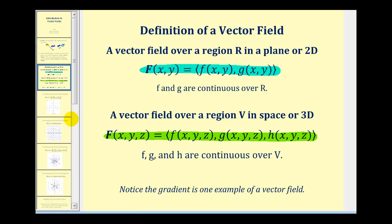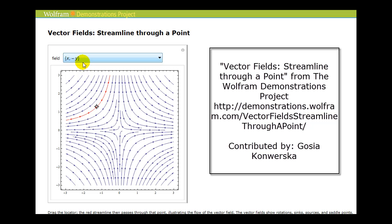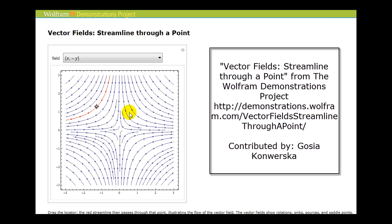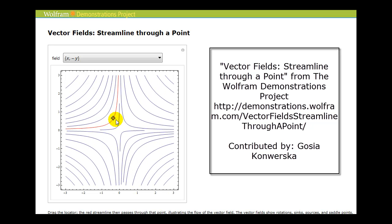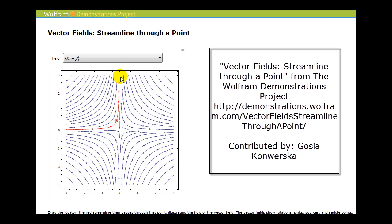Before we graph our own vector fields, let's look at some two-dimensional vector fields created in Mathematica. Here we see the force field given by F(x, y) = ⟨x, -y⟩. Each vector has an arrow giving direction and a length representing the magnitude, which is the amount of force at a given point. Shown in red is the path a point would take based on the forces in the field — moving the point elsewhere changes its path.